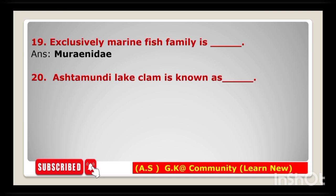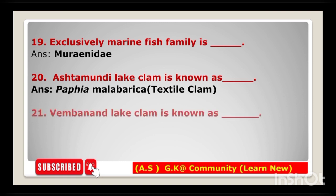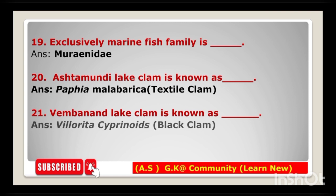Next one: Ashtamudi lake clam is known as — the answer is Papia malabarica, which is also known as textile clam. Next question: Vembanad lake clam is known as — the answer is Villorita cyprinoides, which is also known as black clam.